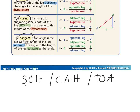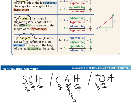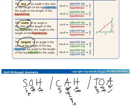The first one stands for sine is opposite over hypotenuse. The second one stands for cosine is adjacent over hypotenuse. And the last one is tangent is opposite over adjacent. So we find the sine, cosine, and tangent of an angle, which is equal to a side over a side.